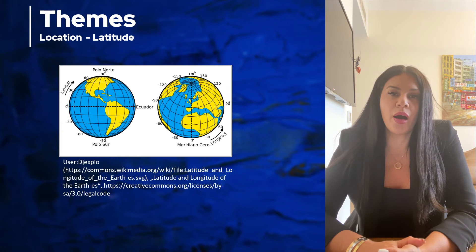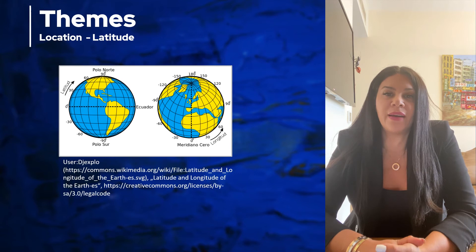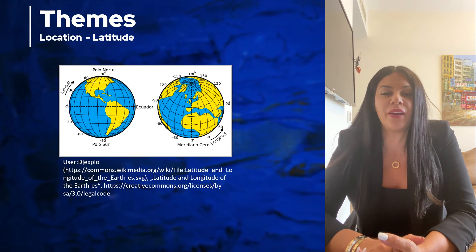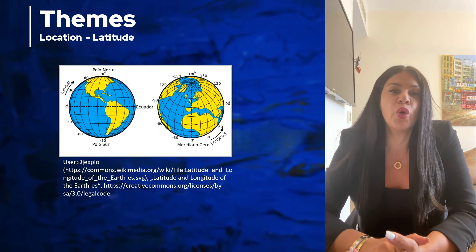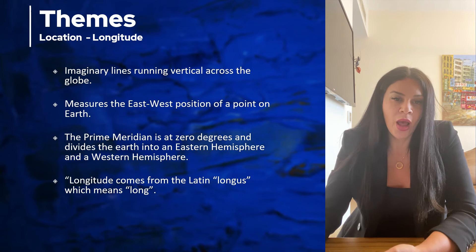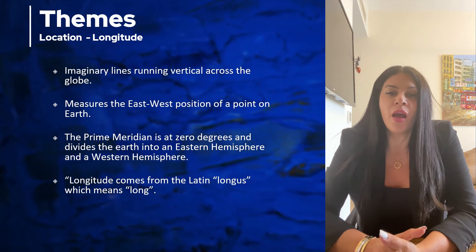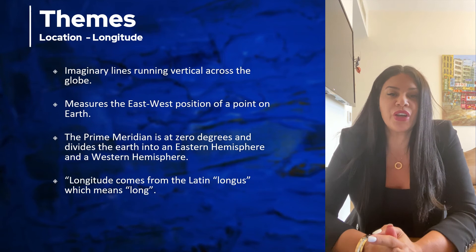If you are at 45 degrees north latitude, you are halfway between the equator and the north pole. And if you are at 45 degrees south latitude, you are halfway between the equator and the south pole. So latitude tells us how far north and south you are from the equator. Longitude tells us how far east and west you are of something known as the prime meridian, which runs right through Greenwich in England.